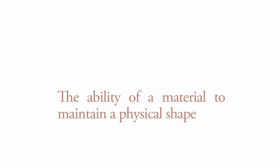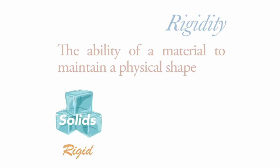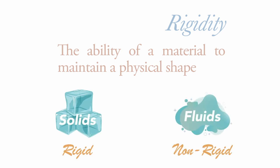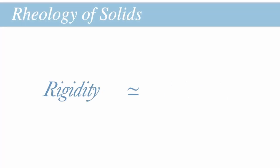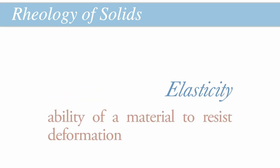The behavior of solids and fluids differs quite significantly from a rheological standpoint. Solids are able to maintain their shape while fluids, by definition, have no shape at all. The ability of a material to maintain a physical shape is known as rigidity, and thus solids are said to be rigid while fluids are non-rigid and instead have the ability to flow. In rheology, for most solids, the property of rigidity is a measure of the elasticity of a material, which can be defined as the intrinsic ability of a material to resist deformation.